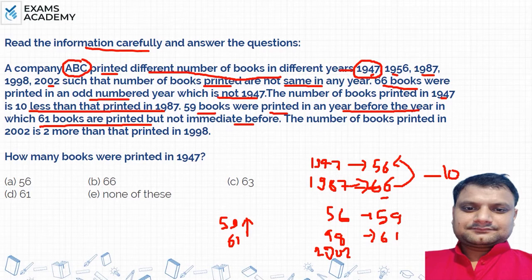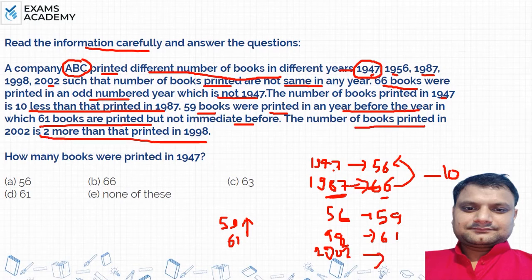Why is it not immediately before? Because the year order is 1947, 1956, 1987, 1998, 2002. After 1956 comes 1987, so 1956 and 1998 are not immediately consecutive — that satisfies the condition. Then it says the number of books printed in 2002 is 2 more than printed in 1998. So 61 plus 2 equals 63 books in 2002.